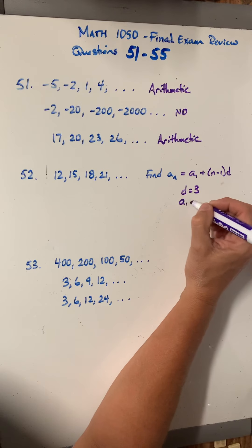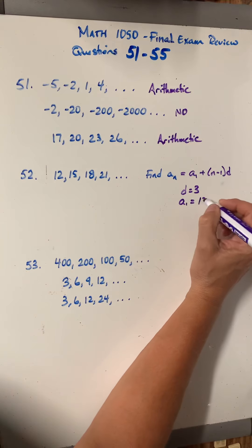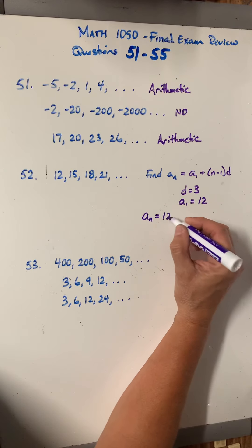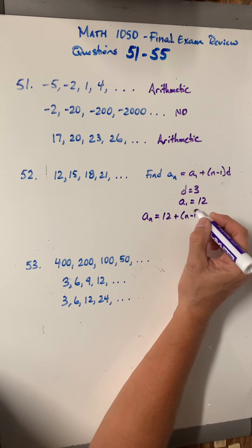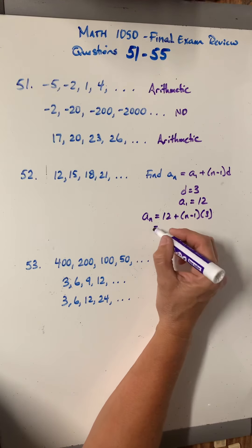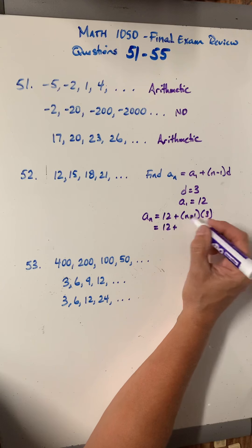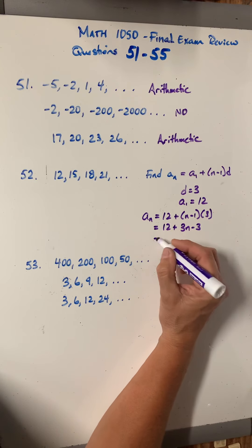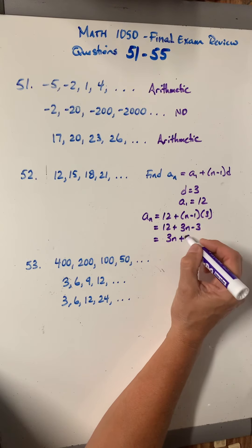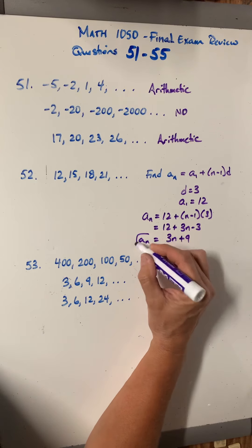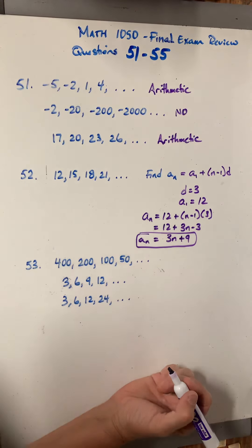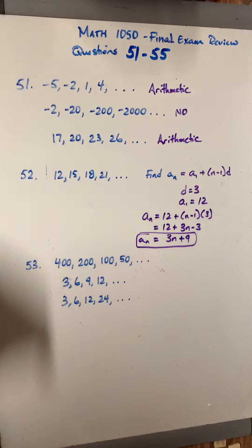And our first term, a sub 1, is 12, because that's the first term. So I'm going to write a sub n equals 12 plus n minus 1 times 3. And then I can clean this up. So 12 plus, I'm going to distribute that 3. 3n minus 3 equals 3n, 12 minus 3 is 9. So this is my answer. And a sub n equals 3n plus 9.